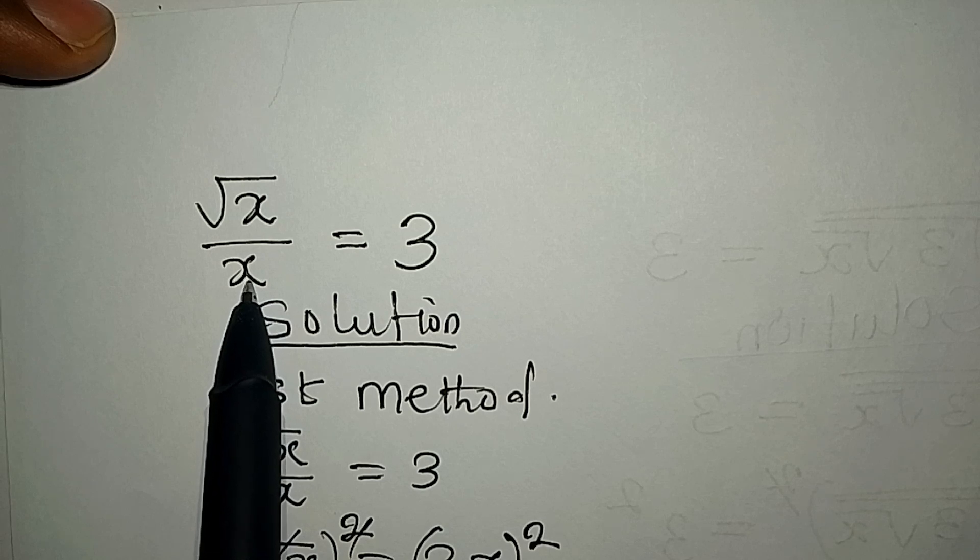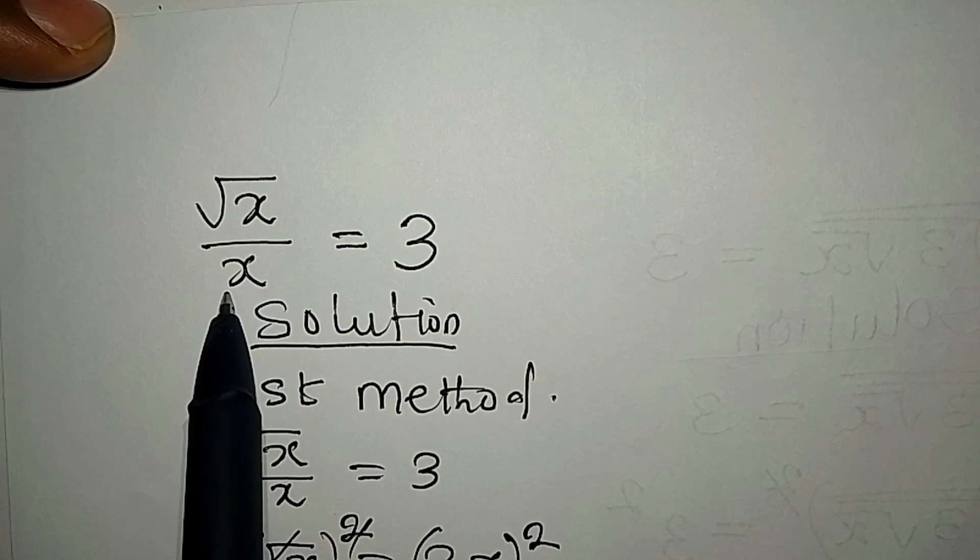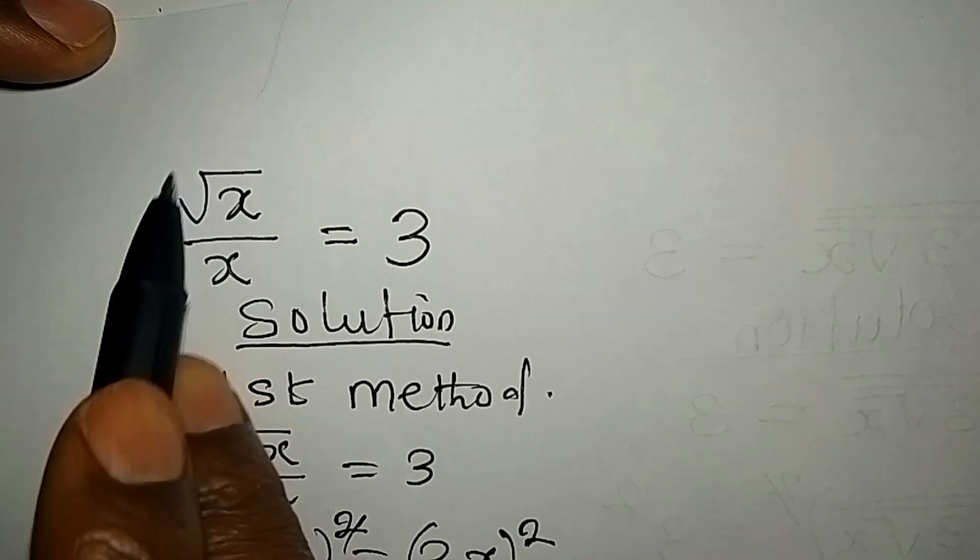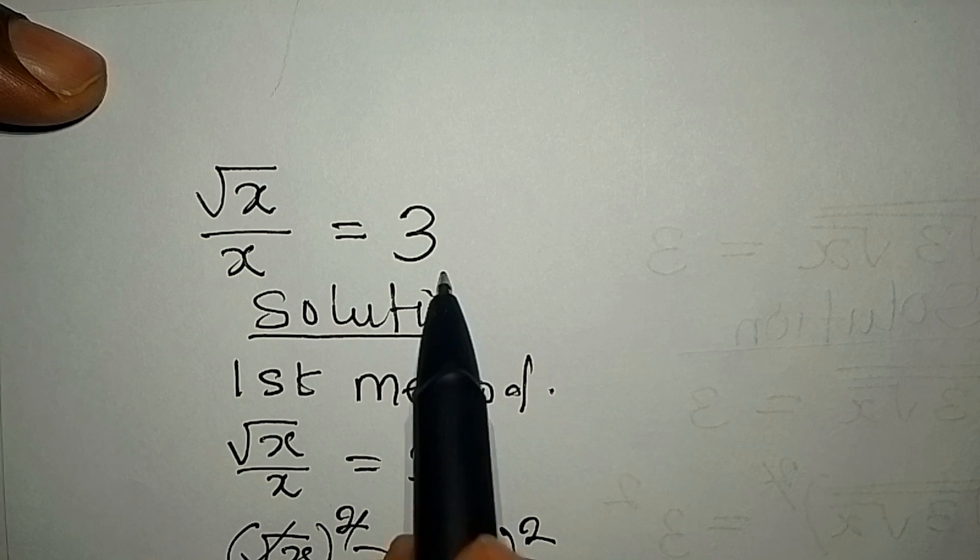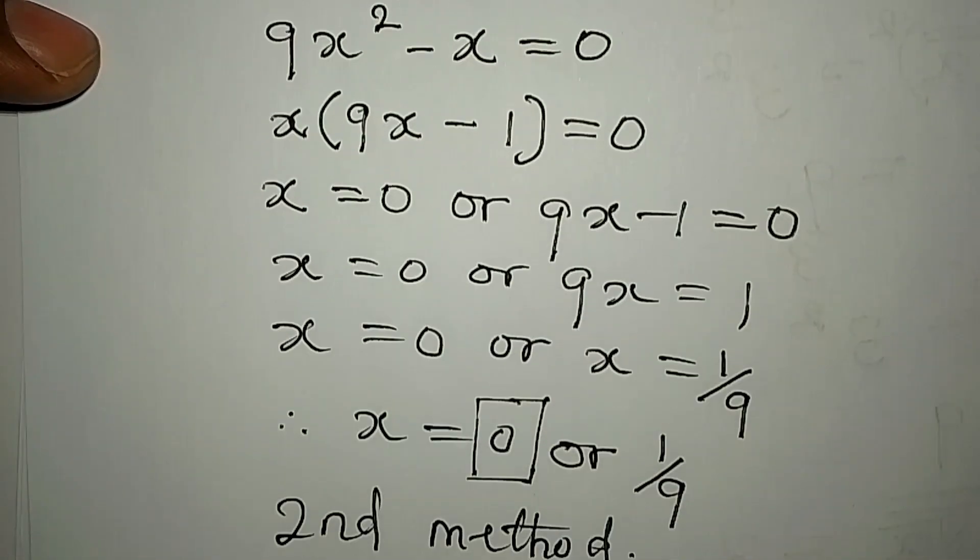Because if you put zero in there, it gives you an undefined expression, an undefined fraction. Whatever you put here, as long as you're putting zero here it will never give you three, so zero should be rejected. So any of the methods you use, it's okay.